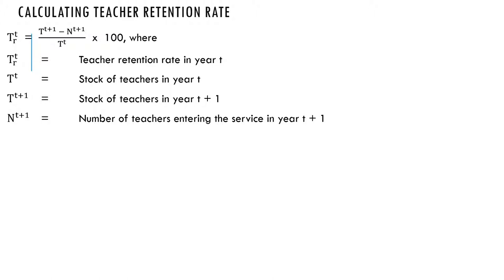Now, how do we calculate the teacher's retention rate? To calculate the teacher's retention rate, you have a formula that will help us do that. Here is the formula: T^t_r equals (T^(t+1) minus N^(t+1)) over T^t, times 100. Where T^t_r represents the teacher's retention rate in year t — year t means the base year, the beginning year. Then we have the stock of teachers in year t, that is the number of teachers you have at the base year.